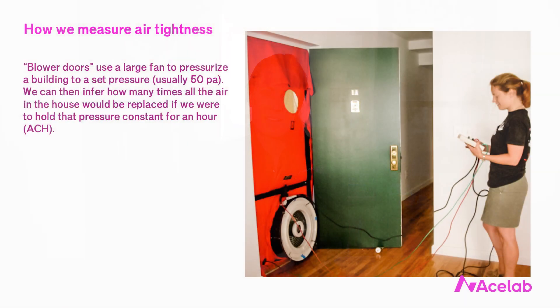Blower doors are large fans that we use to pressurize a building to a set pressure, usually 50 pascals. We then infer how many times all of the air in the building would be replaced if we were to hold that pressure constant for an hour. This is referred to as the air change per hour, or ACH, at 50 pascals. For reference, 50 pascals is about the pressure created by a 20 mile per hour wind.